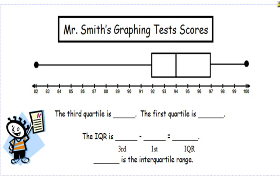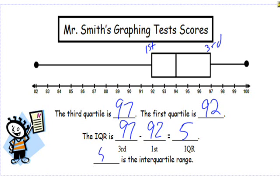Okay. Here are some graphing test scores of a particular class. The third quartile, that would be right here, would be 97. Your first quartile is right here, that's 92. So we subtract the third and the first quartile. And we have an interquartile range of 5.